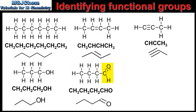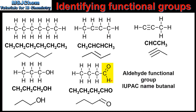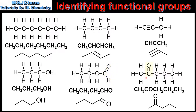In our next example we have a carbon atom with a double bond to an oxygen and a single bond to a hydrogen — this is an aldehyde functional group. In the condensed structural formula it is represented as CHO, and in the skeletal formula only the double bond to the oxygen is shown.